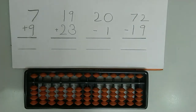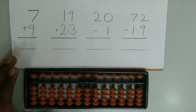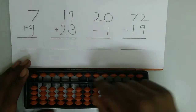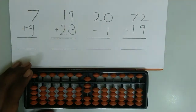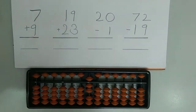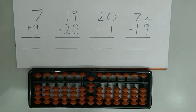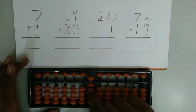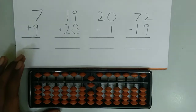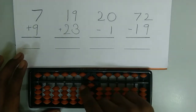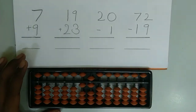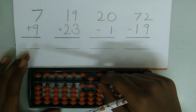First let's try big friend additions. The first example is 7 plus 9. First we have to represent 7 on the abacus. Now we have to add 9. The formula for addition is minus friend plus boss. The friend of 9 is 1, so we have to do minus 1 because minus friend, and 10 is the boss in big friend, so we have to add 10. The answer is 16.